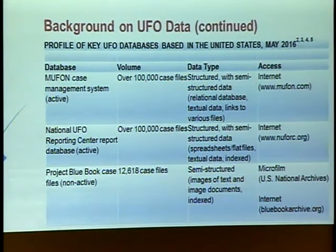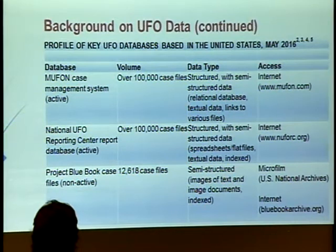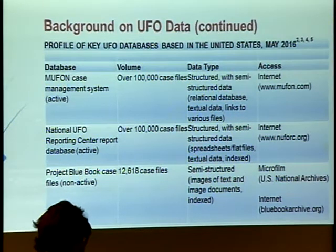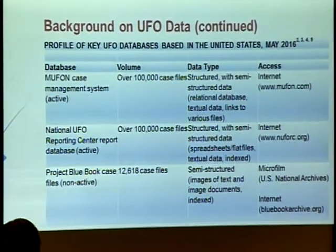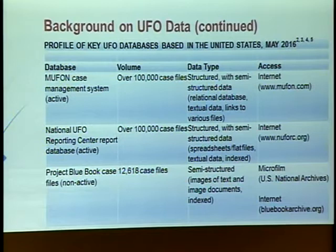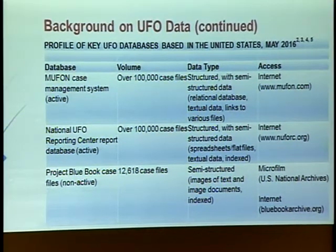Here's a sample of some key UFO data sources based in the United States. Some of you may have heard of the Mutual UFO Network, MUFON Case Management System, which is active and has over 100,000 case files. The type of data is structured combined with some semi-structured data; it functions like a relational database with textual data and links to photographs and even videos. There's also the National UFO Reporting Center, which is somewhat similar, and Project Blue Book — an example of a non-active, archived database with even less structured files.